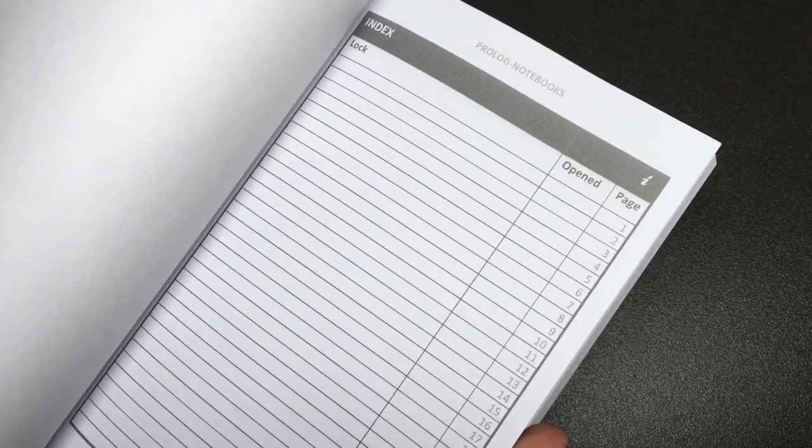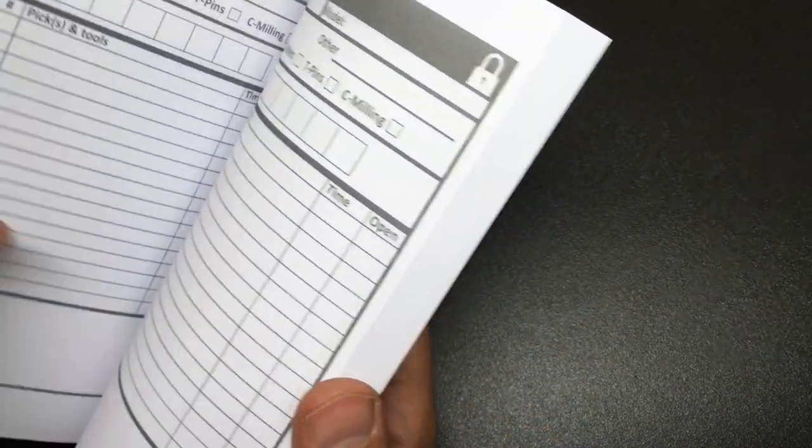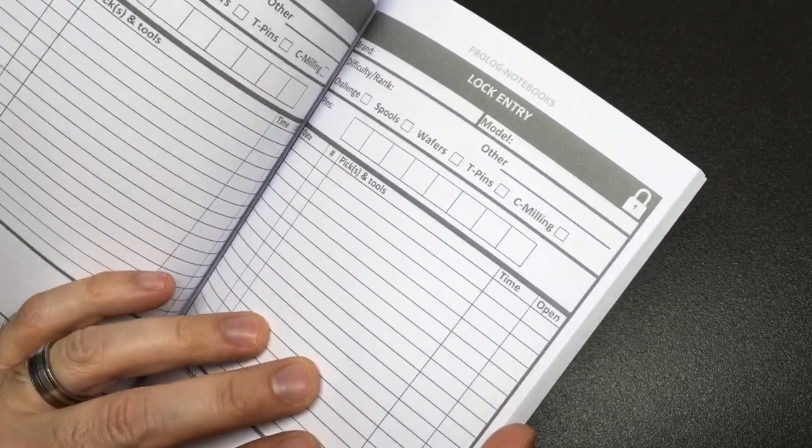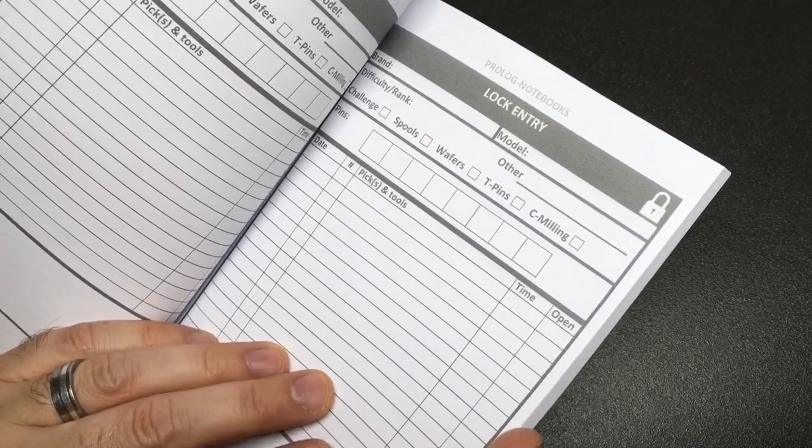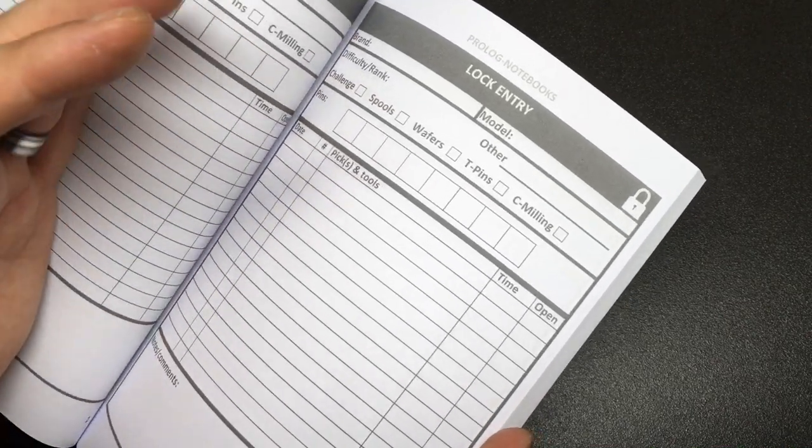But I just quite like the idea that you could go, oh, the Brinks 612. That was, yeah, I picked that. And yeah, I remember now it actually had four spools and three standards and an anti-bump spring and, you know, it's all that kind of stuff. I quite like that.